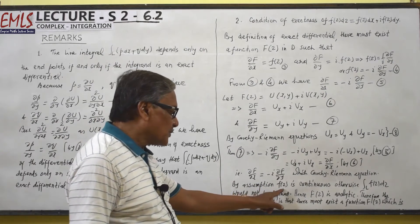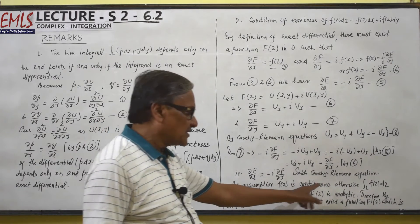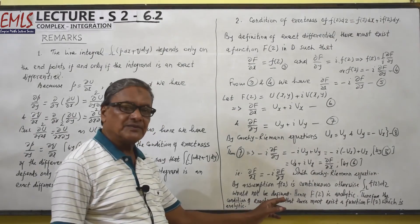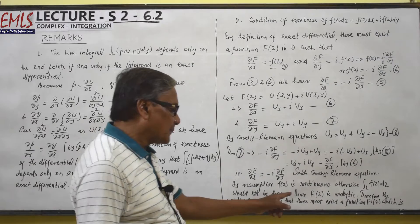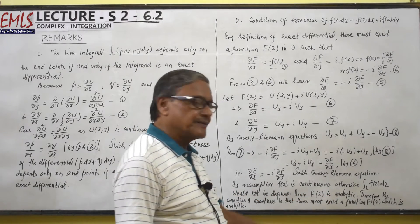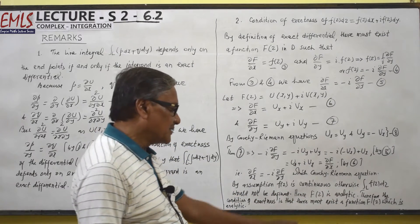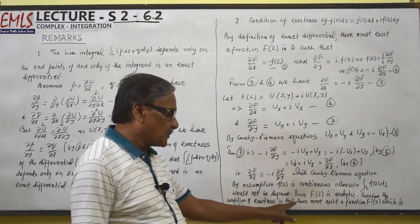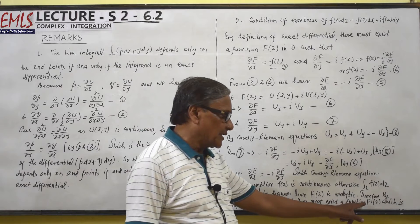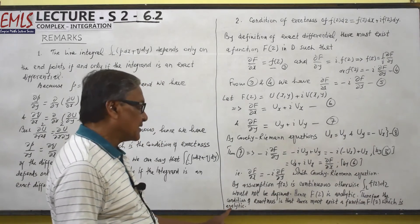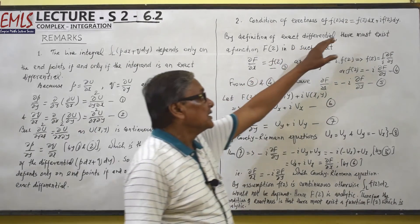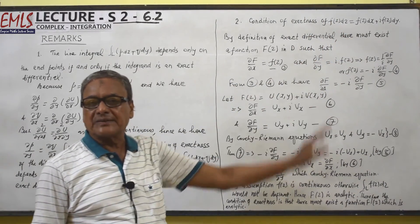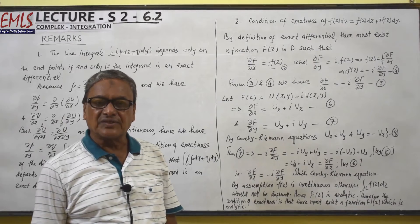By assumption, small f(z) is continuous — otherwise the integral over L of f(z)dz would not be defined. Hence capital F(z) is analytic. Therefore, the condition of exactness is that there must exist a function capital F(z) which is analytic. That is, the condition of exactness of this differential is that there exists an analytic function capital F(z).